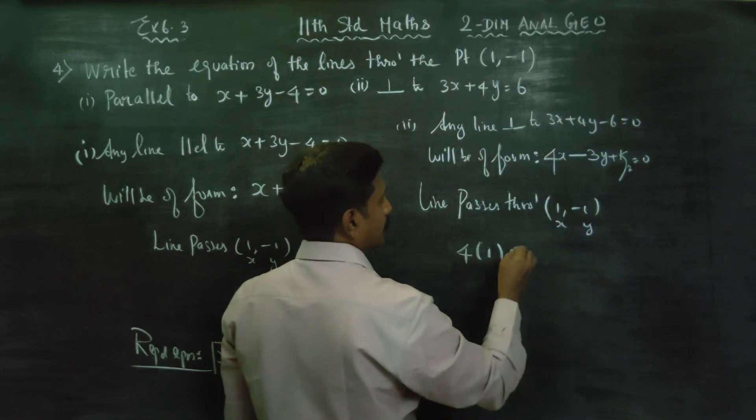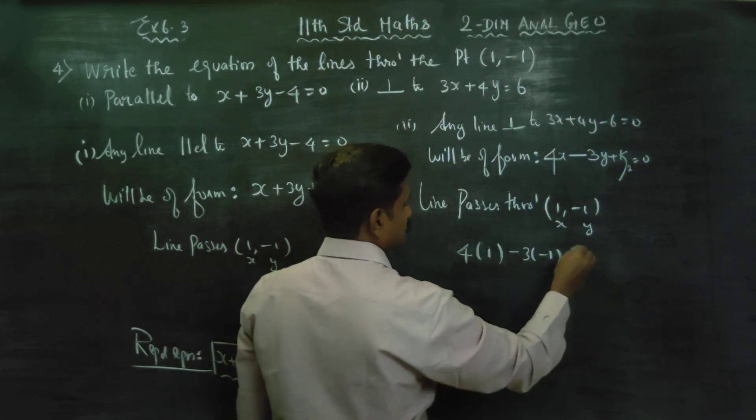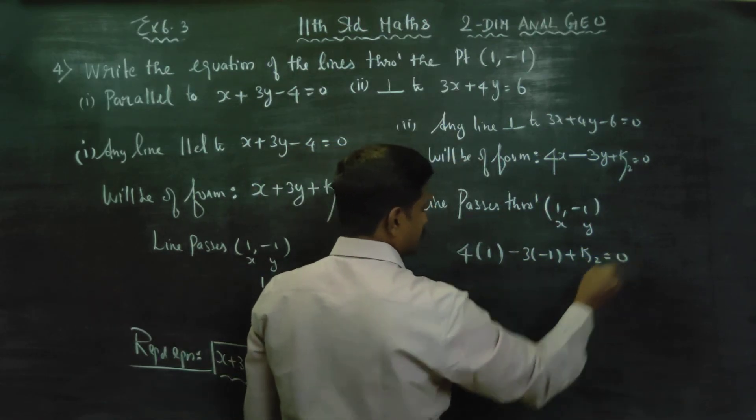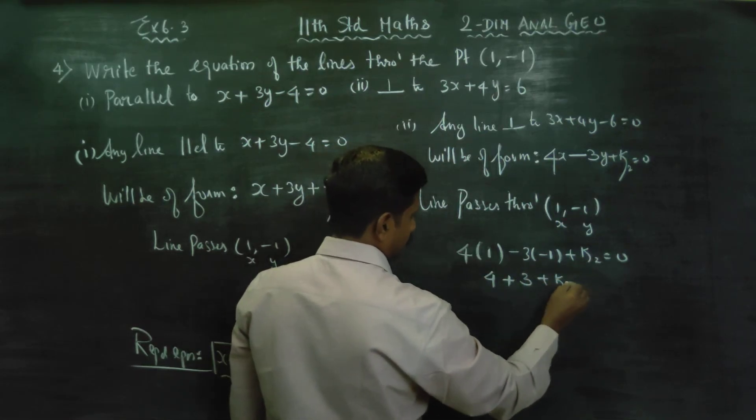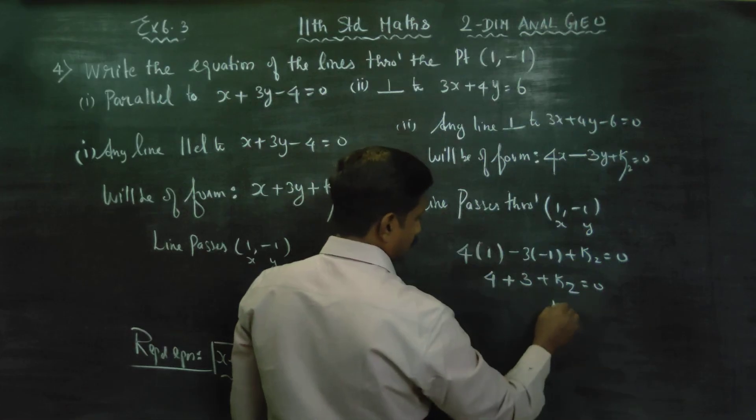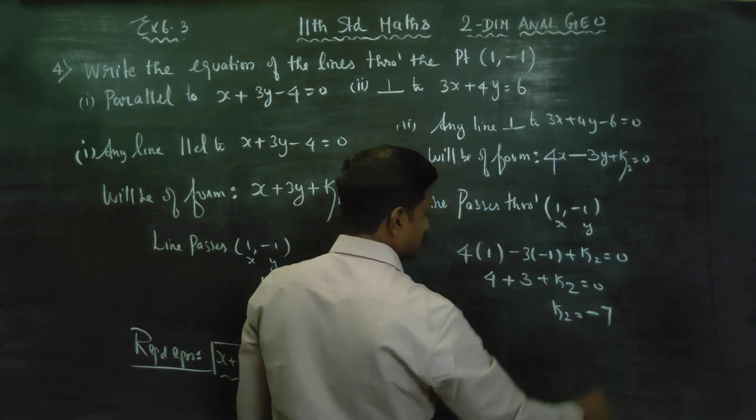4 plus 3 plus k2 equals 0. So, k2 equals minus 7.